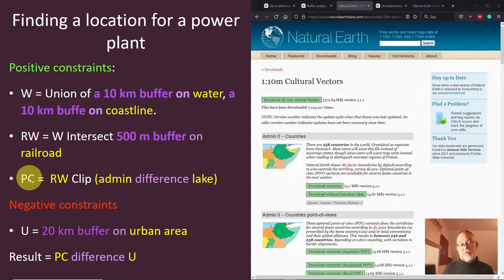Then in this example, there was one negative constraint, namely that our area was not allowed to be within 20 kilometers of an urban area. So typically in this type of deconstruction, you first construct all your positive constraints combined using union intersect clip. Then you combine all your negative constraints, and then you do a difference of your positive with your negative constraints. So that will be your result.